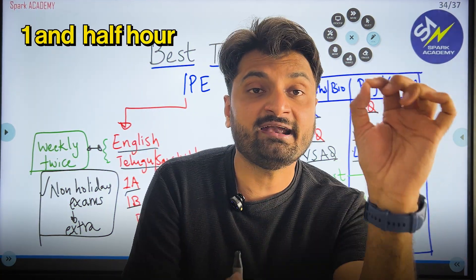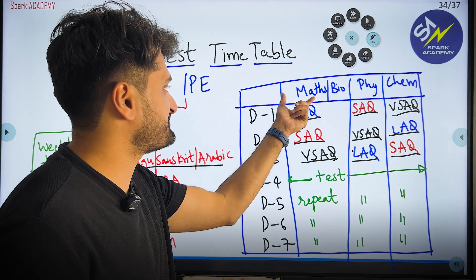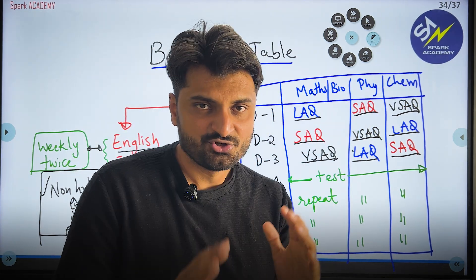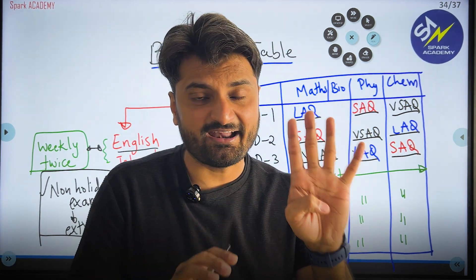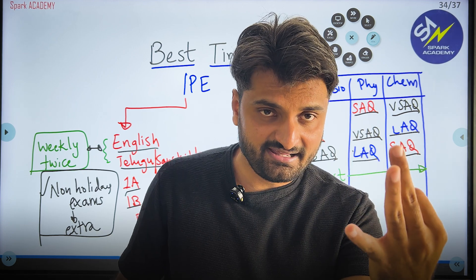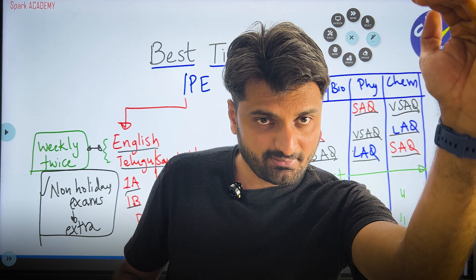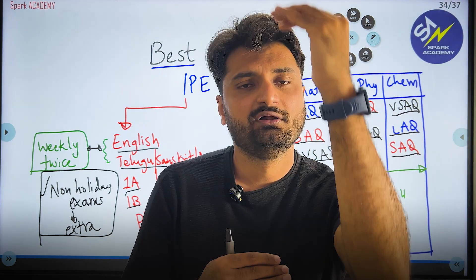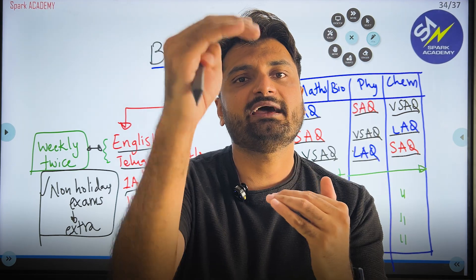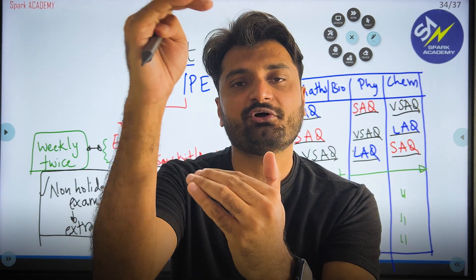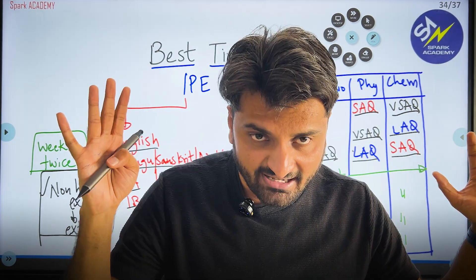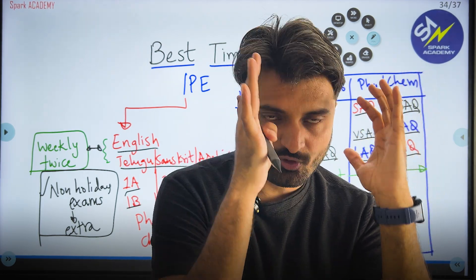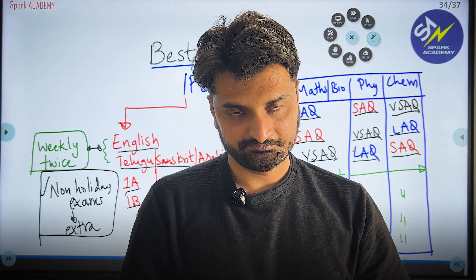Our recommendation is to spend one and a half hours per subject: one and a half hours for Maths or Biology, one and a half hours for Physics, and one and a half hours for Chemistry — totaling four and a half hours per day. Over three days you will cover LAQs, SAQs, and VSAQs for all subjects in rotation.